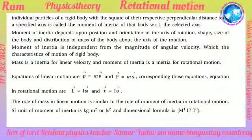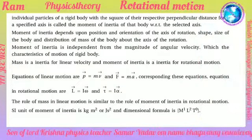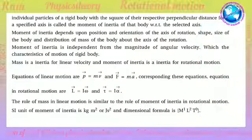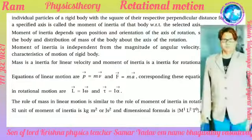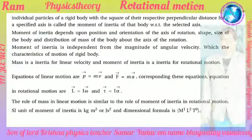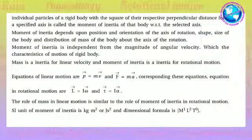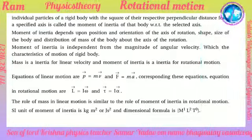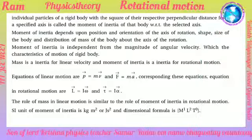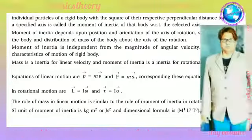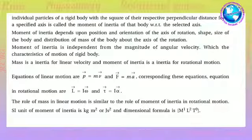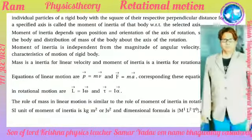Equations of linear motion are p = mv and F = ma. Corresponding equations in rotational motion are L = I*omega and tau = I*alpha. The role of mass in linear motion is similar to the role of moment of inertia in rotational motion. SI unit of moment of inertia is kilogram meter squared (kg·m²) or joule times second squared, and the dimension formula is M¹L²T⁰.